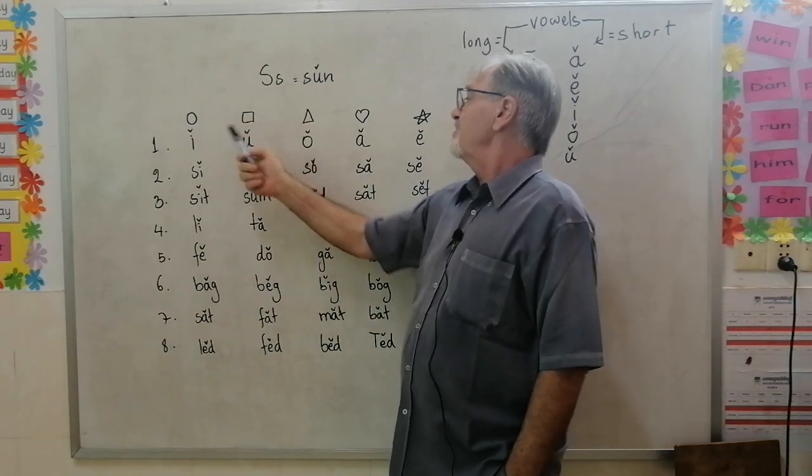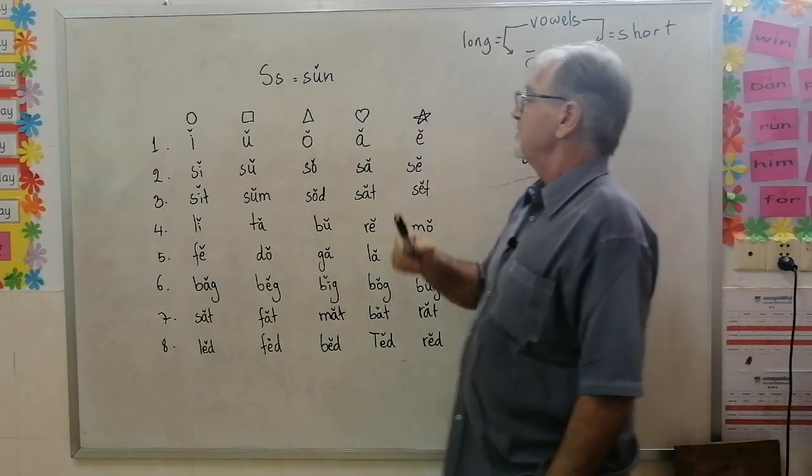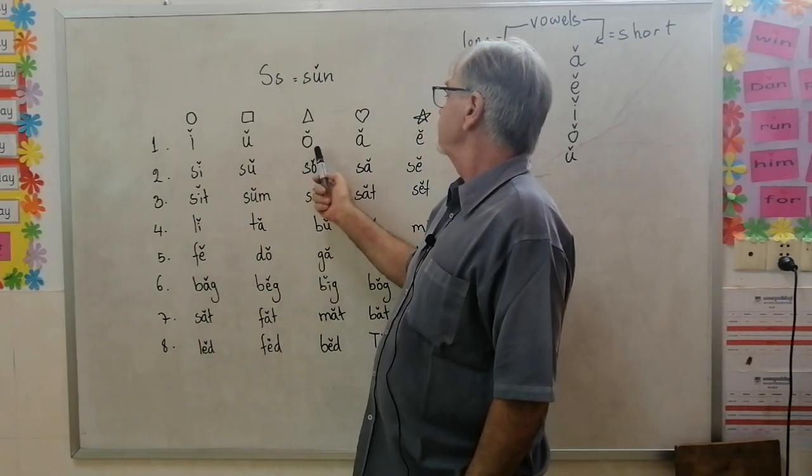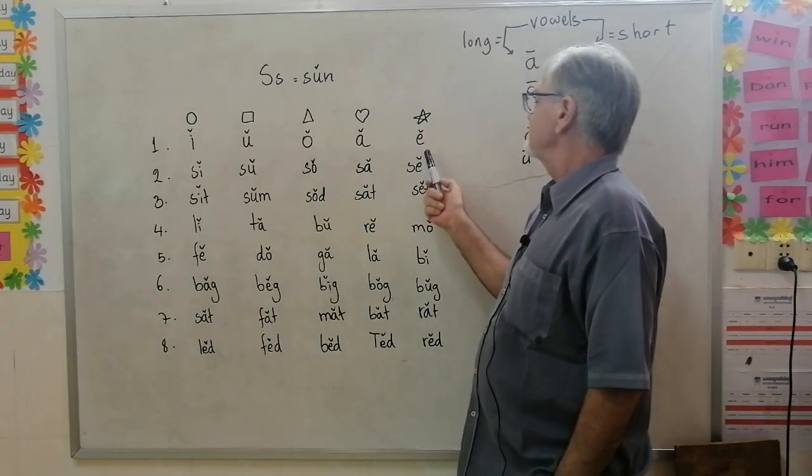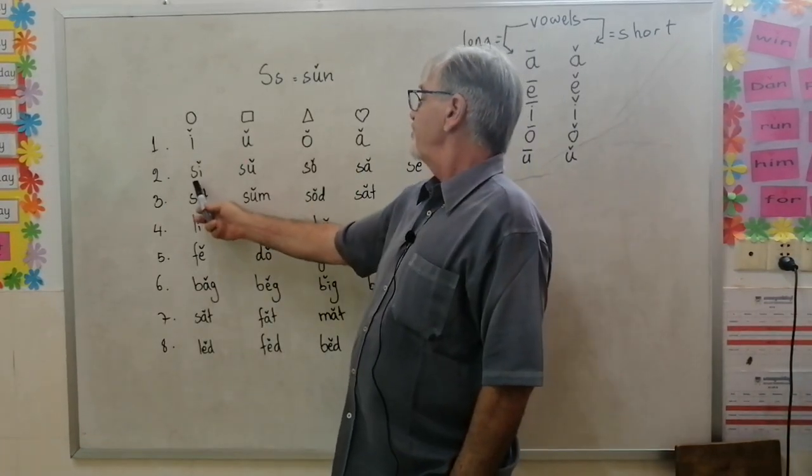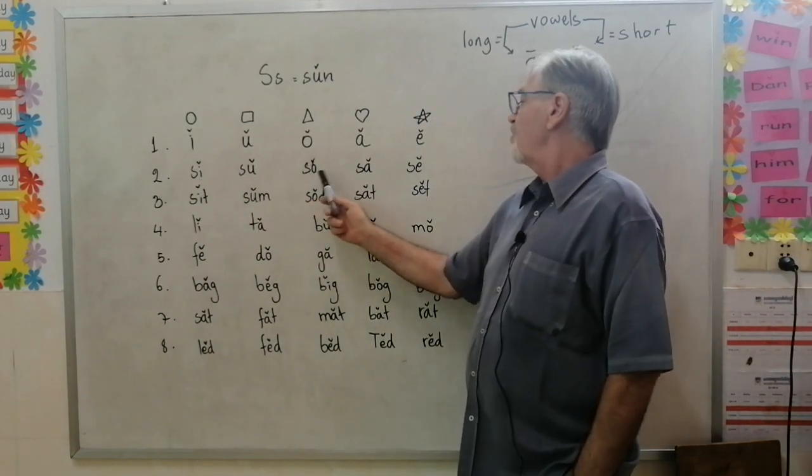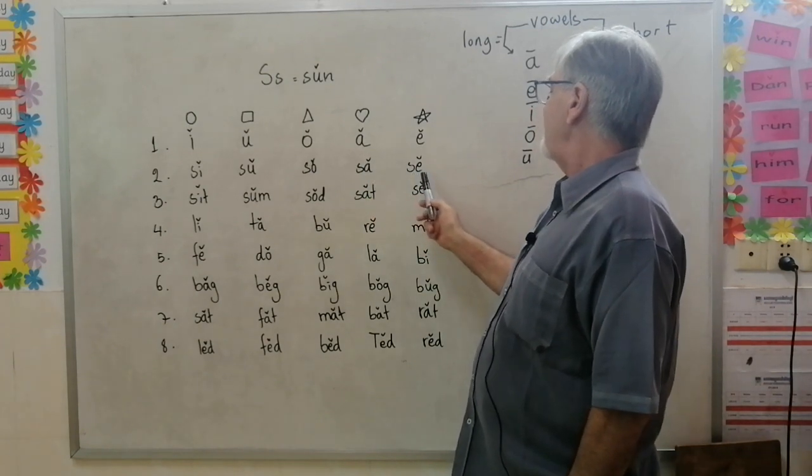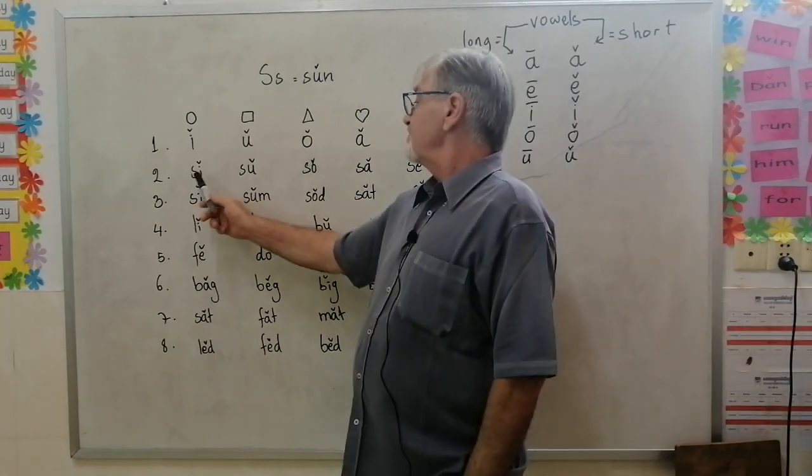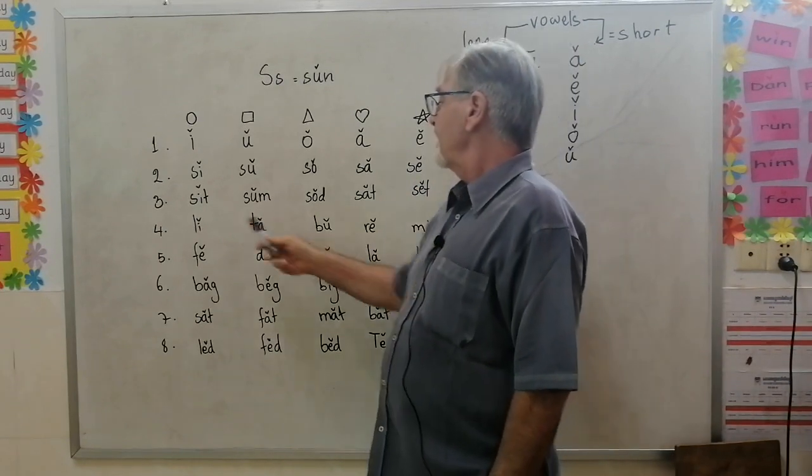Let's start with circle, square, triangle, heart, and star. Line one: i, u, o, a, e - they are your vowels. S-i, s-i, s-e, s-o, s-o, s-a, s-a, s-e, s-e. These are sounds, they're not words.